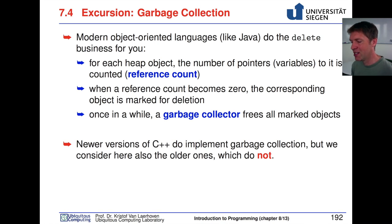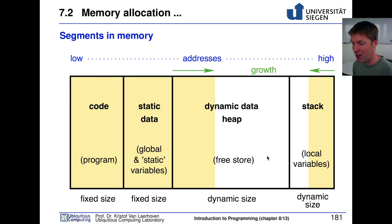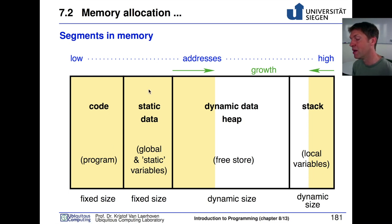To keep this course as simple as possible, and because many environments still use an older version of C++, we assume there won't be any garbage collection. This helps convey why the memory model we saw earlier is so important — why having dynamic heap data, the stack, program code in memory, and statically reserved data all matter. Understanding the differences between those pieces of memory is very important to keep in mind.